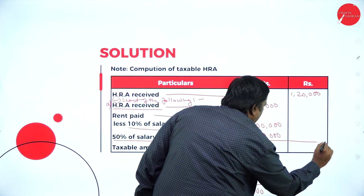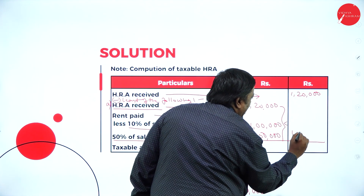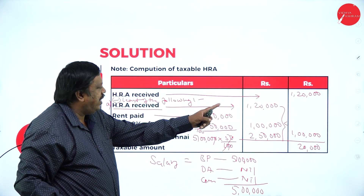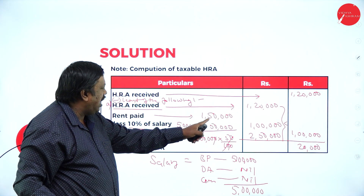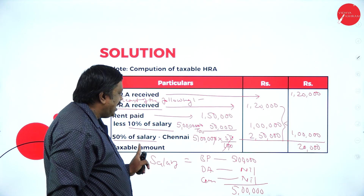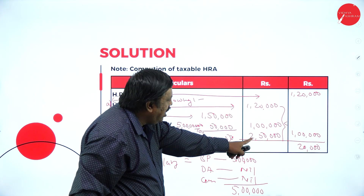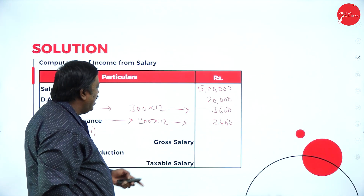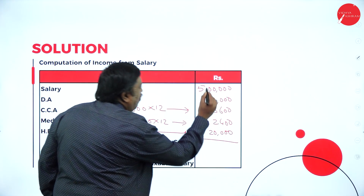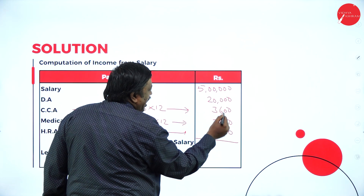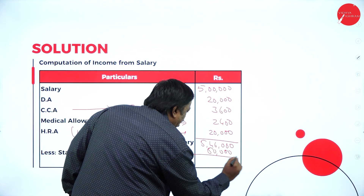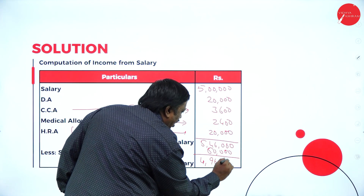In these three, whichever is less — the least is one lakh. So one lakh twenty thousand minus one lakh equals twenty thousand taxable HRA. Adding up: salary five lakh, DA twenty thousand, CCA three thousand six hundred, medical allowance two thousand four hundred, HRA taxable twenty thousand — gross salary is five lakh forty-six thousand. Standard deduction of fifty thousand gives taxable salary of four lakh ninety-six thousand.